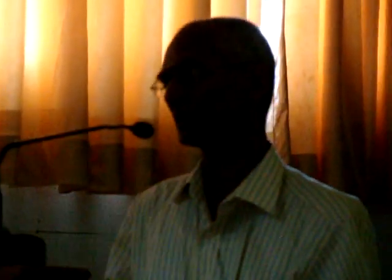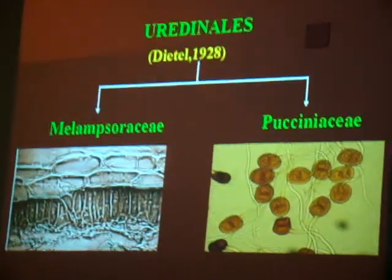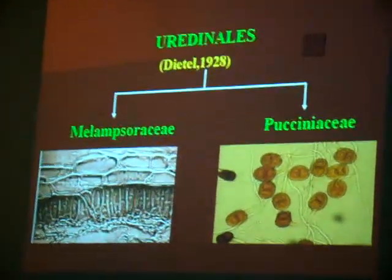Apart from the pedicel characters and the paraphysoid characters, these morphological characters have been taken extensively into consideration in the classification of the families of rust fungi. This simplest classification, very easy to follow, was proposed by Detail.